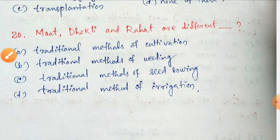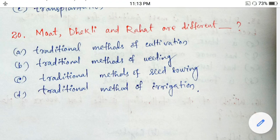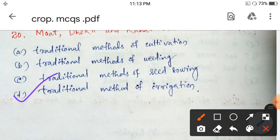Last question: mote, dhakli, and rahat are — different traditional methods of cultivation, traditional methods of wading, traditional methods of seed sowing, or traditional methods of irrigation? These are all different traditional methods of irrigation. Option D is correct.